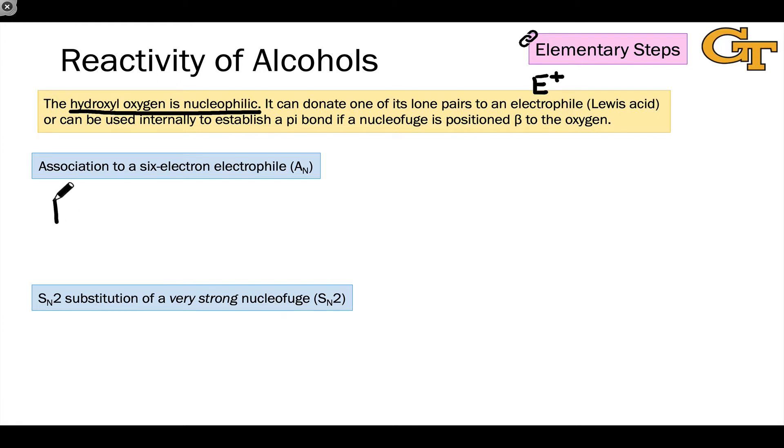The first example here is association to a six-electron electrophile, or what we call an AN, association of a nucleophile step. And in this elementary step, the hydroxyl oxygen coordinates to what we call a six-electron electrophile. So a good example of this might be BH3, borane. This is a six-electron atom, the central boron atom in borane. And the electron flow for this, it's an N to A interaction, non-bonding lone pair to empty atomic orbital, empty 2p atomic orbital in the case of boron. And in the resulting product, the oxygen has increased in charge by one unit, and the boron has decreased in charge by one unit. It's gone from neutral to negatively charged.